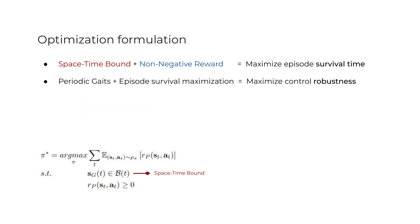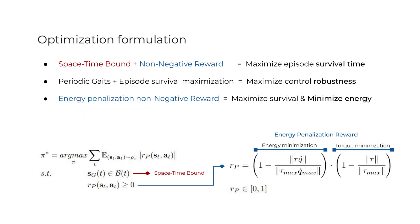At the same time, we define a simple reward function with a single term that penalizes energy consumption, encouraging the agent to find energy-efficient stable periodic gaits featuring natural spring-mass dynamics.